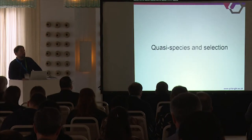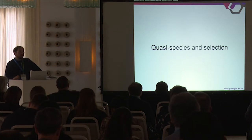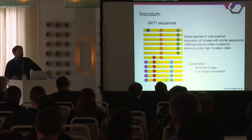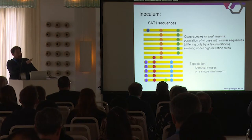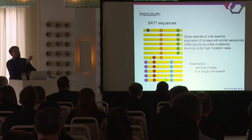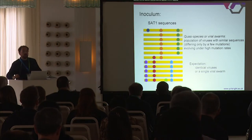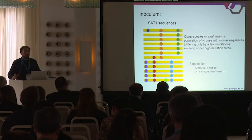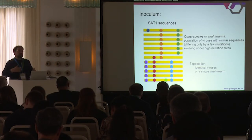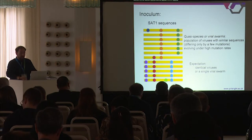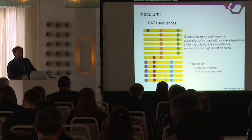I go through two sets of results. The first is about the genetic structure in terms of quasi-species and selection. This is a graphical illustration of what we find — genomes with mutations illustrated by color dots. What we expect in a usual FMDV infection is a quasi-species or a swarm of low-frequency variants that have emerged due to the high mutation rate of FMDV. This is not at all what we found in the inoculum.